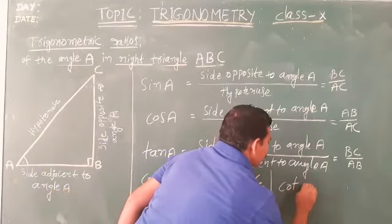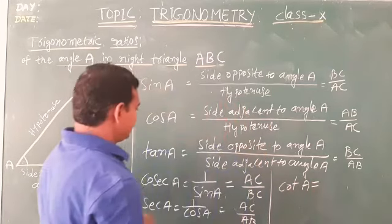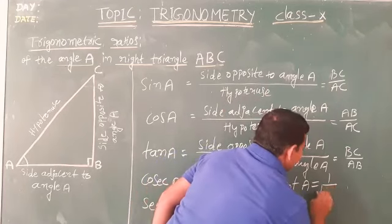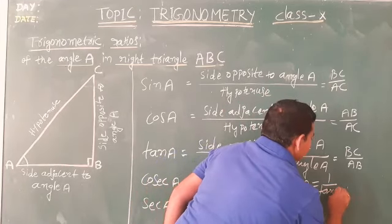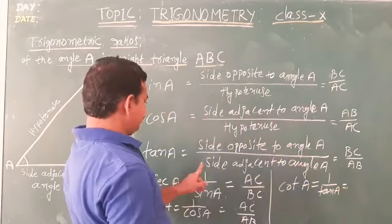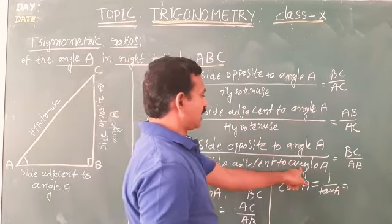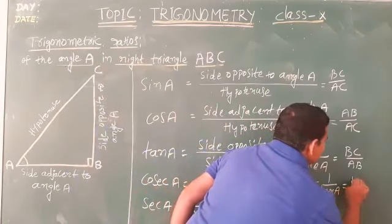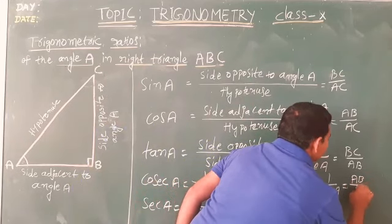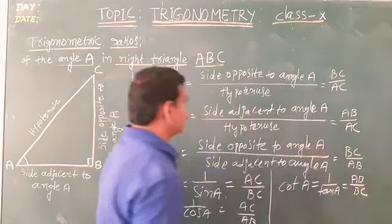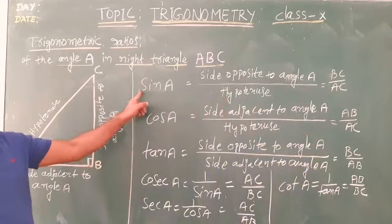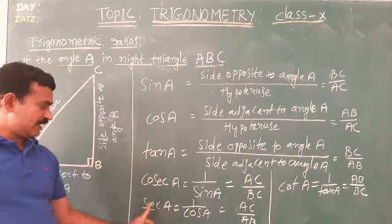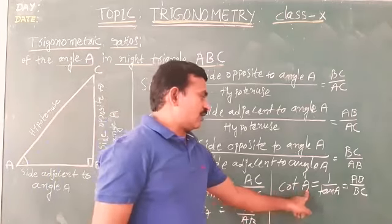Cot A is the reciprocal of tan A. So cot A equals the side adjacent to angle A divided by the side opposite to angle A, which in this triangle is AB by BC. These are the six trigonometric ratios: sin A, cos A, tan A, cosecant A, secant A, and cot A. Thank you.